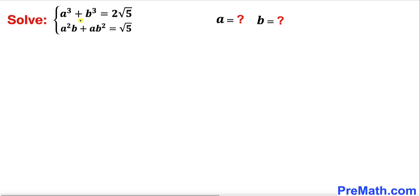Welcome to pre-math. In this video we are going to solve this given system of equations: a³ + b³ = 2√5, and the second equation is a²b + ab² = √5.